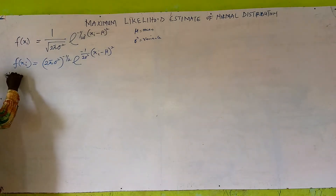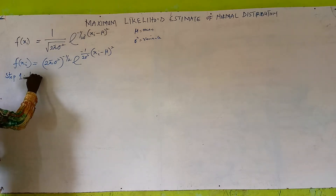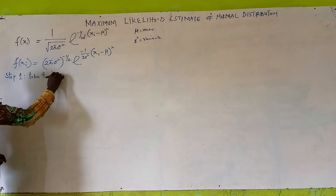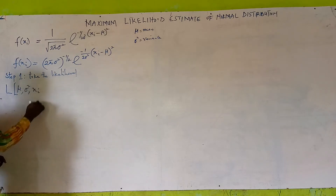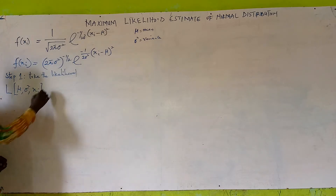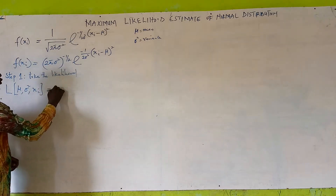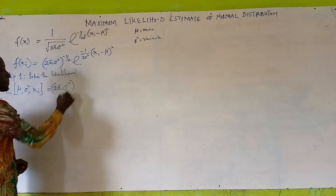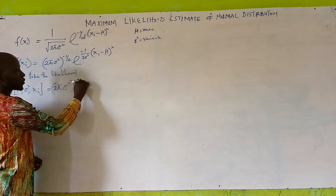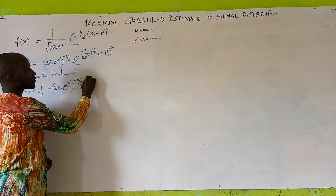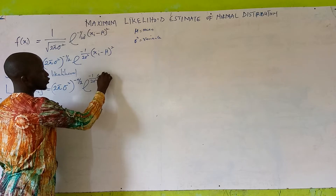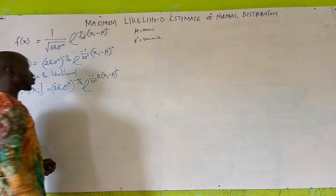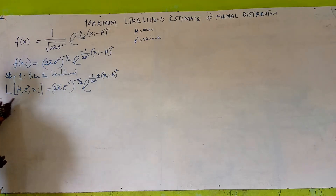Now the first step — Step 1 — is to take the likelihood function of this distribution. We write L(mu, sigma squared | x1, x2, ..., xn) equals (2 pi sigma squared) raised to the power minus n over 2, multiplied by the exponential raised to the power minus 1 over 2 sigma squared times the summation of (x_i minus mu) squared. We have taken the likelihood function of this distribution.